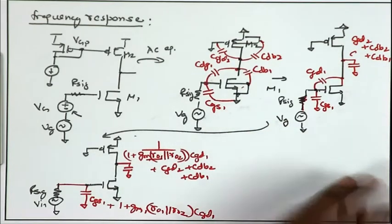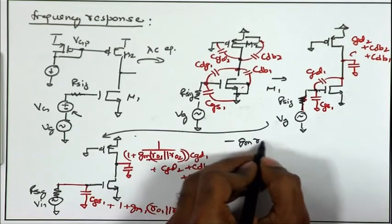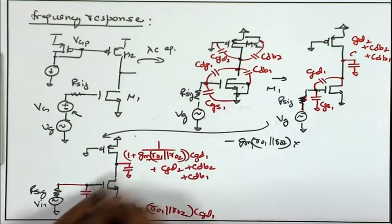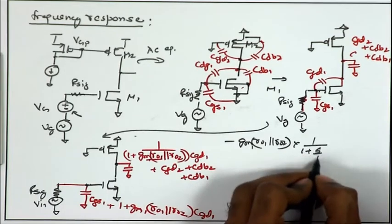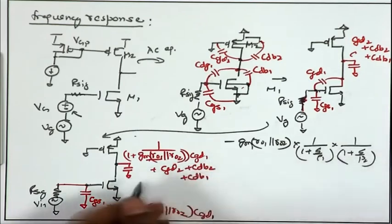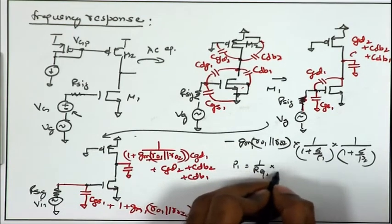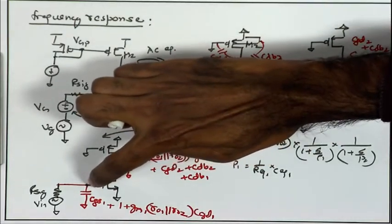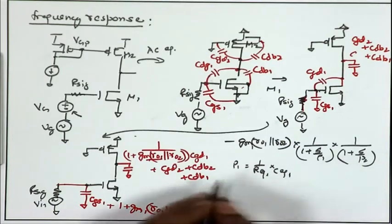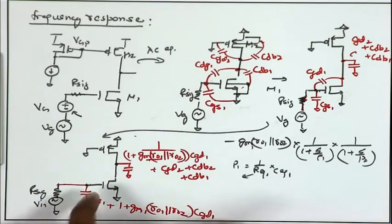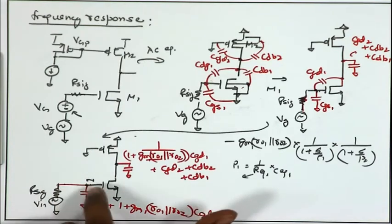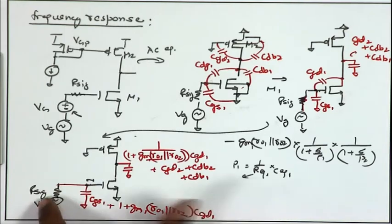The low-frequency gain of the amplifier is −G_M·(R_O1 ∥ R_O2), multiplied by two pole factors since the circuit has two nodes. The poles P1 and P2 are 1/(R_eq1·C_eq1) and 1/(R_eq2·C_eq2). For R_eq1 at node 1: looking into the gate the MOSFET has infinite impedance, and on the other side we have R_signal, so R_eq1 = R_signal.